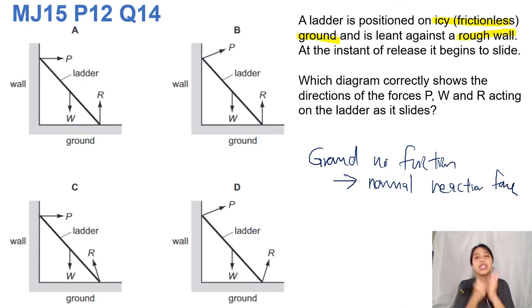Normal reaction means normal means perpendicular. So the force on the ground should only be perpendicular, which means C and D are out.